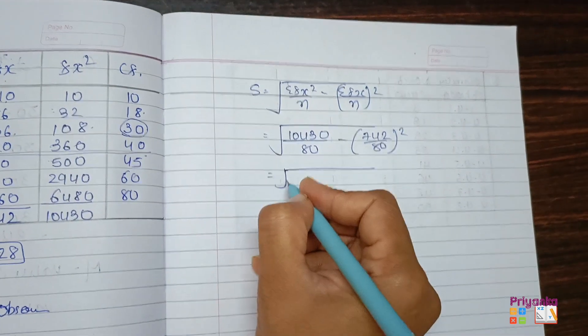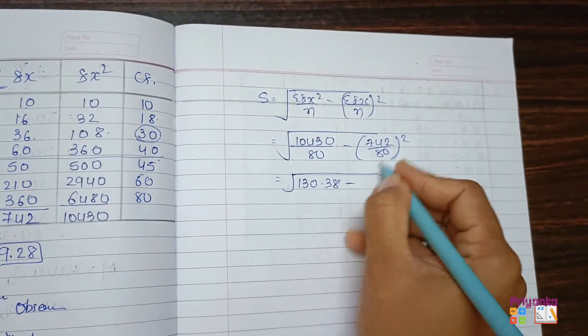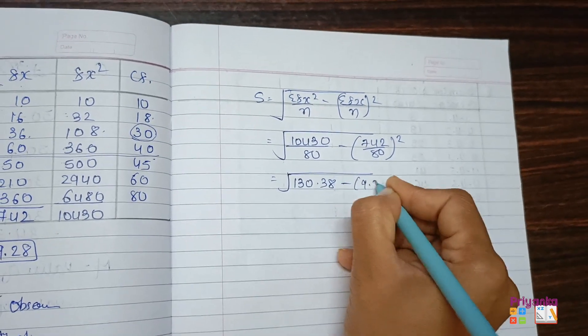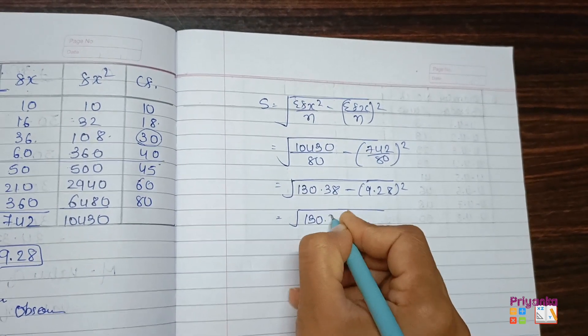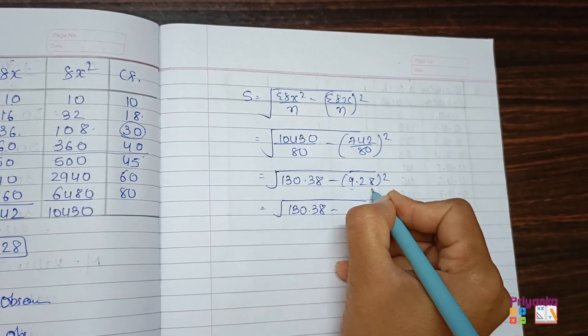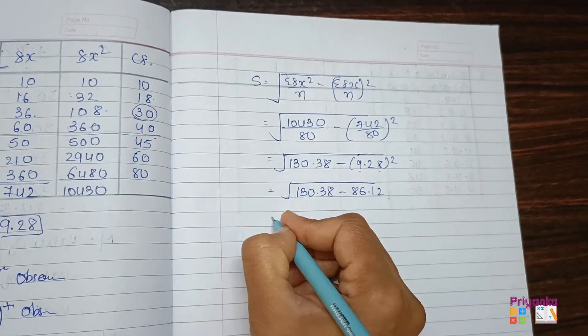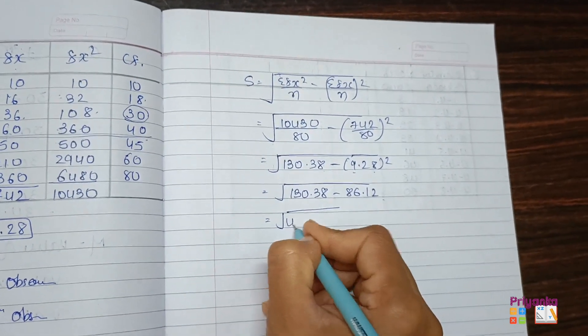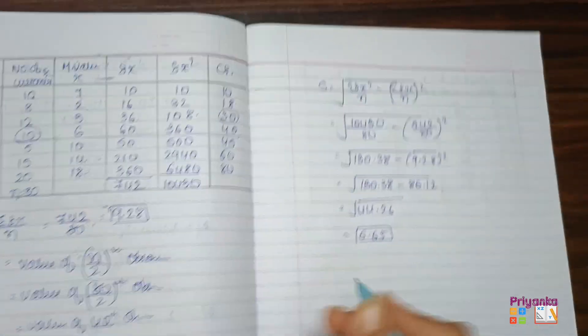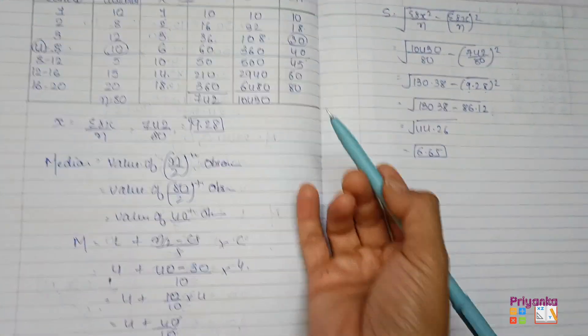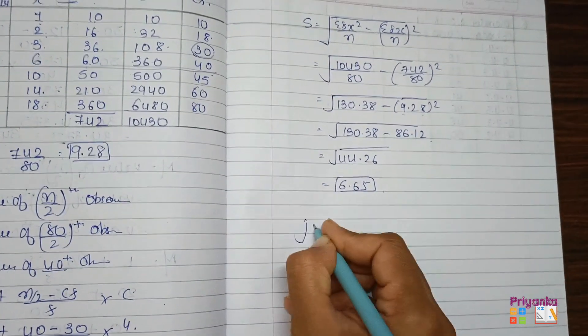We'll keep the value over here. 10430 divided by 80 minus 742 divided by 80 whole square. The division of this, here we get 130.38 minus the division of this 9.28 whole square. You will get 86.12, get them subtract 44.26, and the final answer is 6.65.